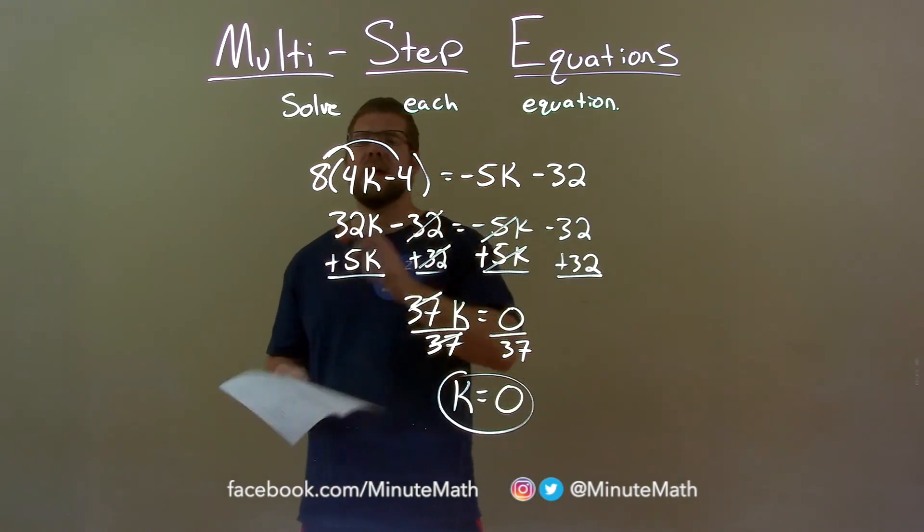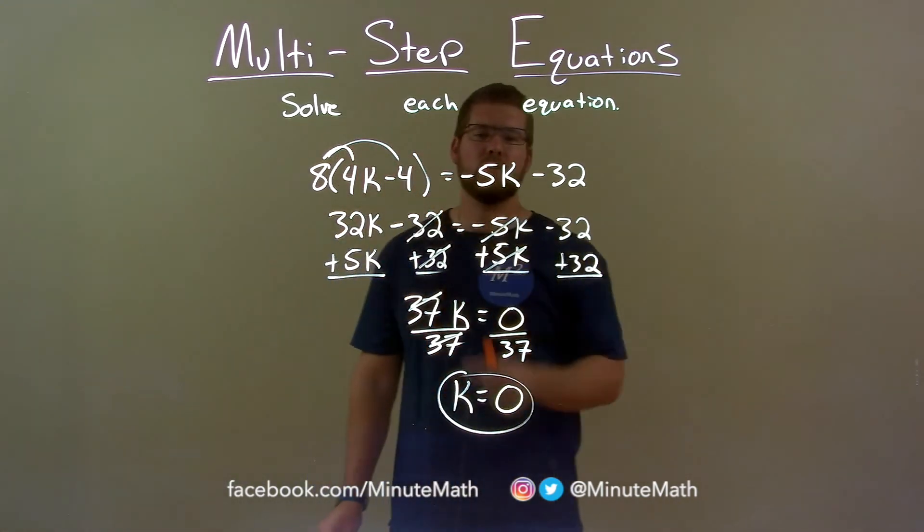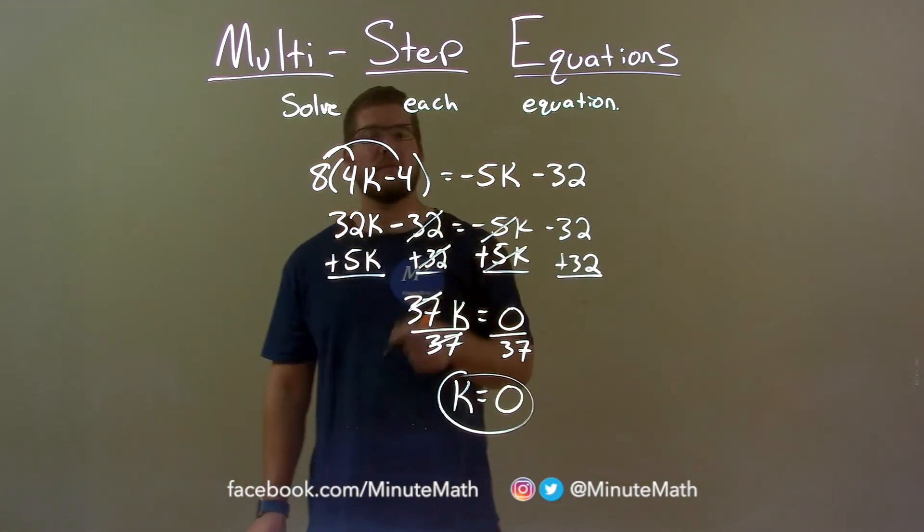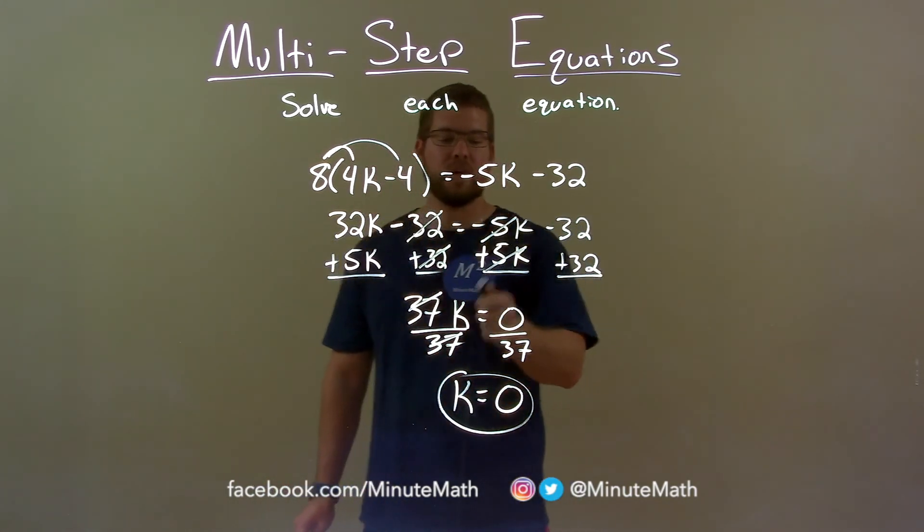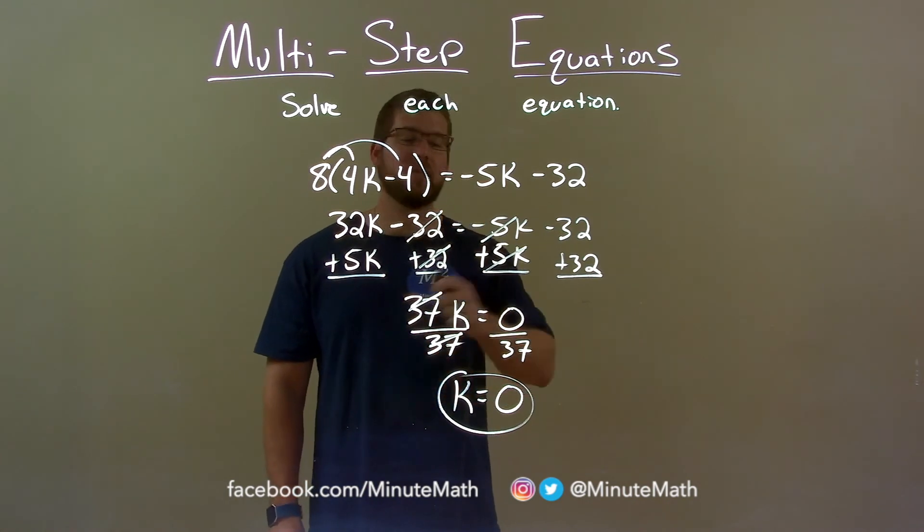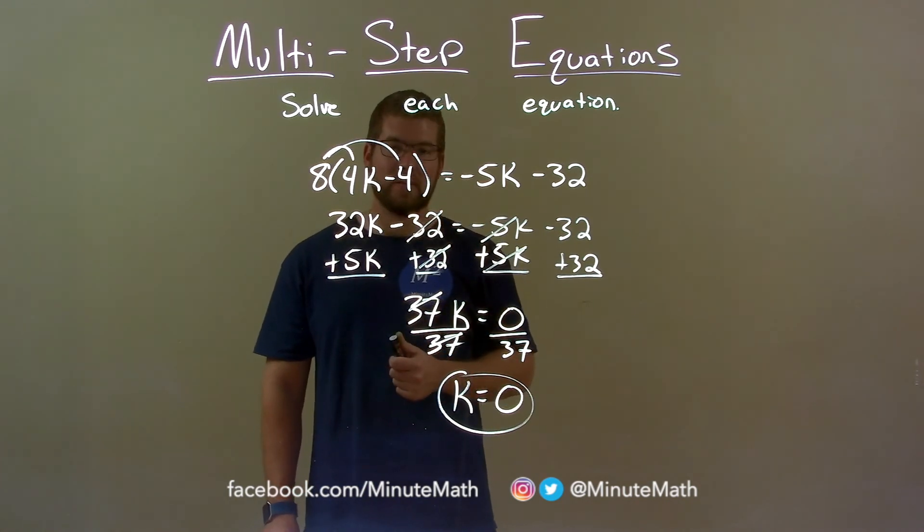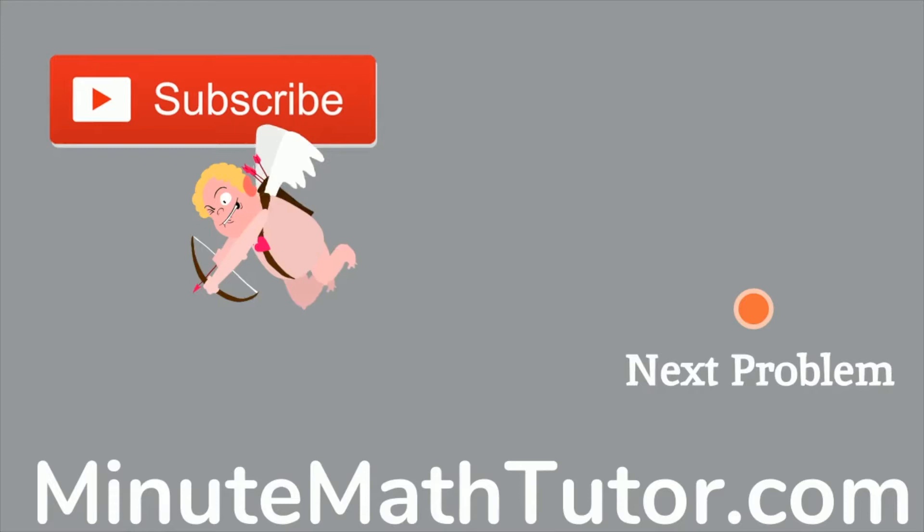Quick recap. We're given 8 times 4k minus 4 equals negative 5k minus 32, and we have to solve for k. Distribute the 8 into the parentheses, then combine like terms. 37k equals 0, divide 37 on both sides, and k equals 0.